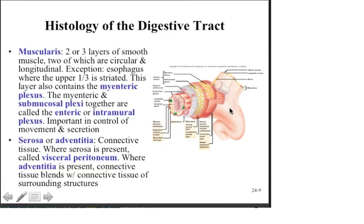The serosa is the connective tissue outer layer that attaches the organ to surrounding tissue. Where serosa is present it's called the visceral peritoneum; where adventitia is present, the connective tissue blends with surrounding tissue. The connective tissue seals the layers together and attaches the organ to surrounding structures. The smooth muscle provides propulsion; the nervous tissue initiates propulsion and secretion; and the epithelial tissue provides a barrier and produces secretions to facilitate lubrication and chemical digestion.